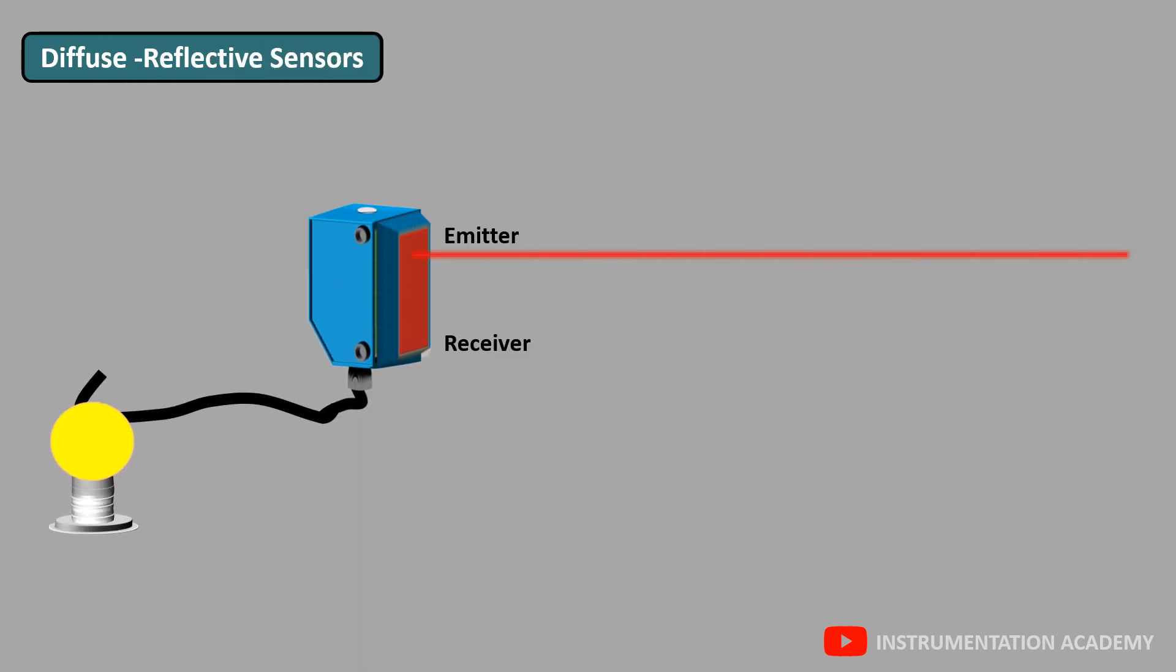In diffuse reflective sensors, as the receiver does not receive the light normally from the emitter, in light on mode, the output will not be energized. So the bulb will be off. While in dark on mode, as the output will be energized when the receiver does not receive the light from the emitter, the bulb glows.